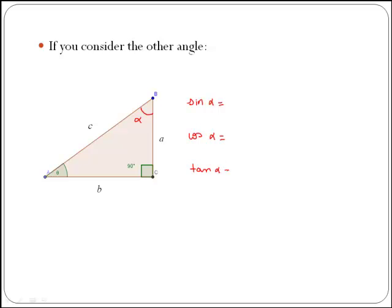The definitions are the same in general, but you have to keep in mind that now the opposite and adjacent sides have changed. Sine of alpha, remember, is opposite over hypotenuse. In this case, the opposite side would be B, while the hypotenuse is still C, because the hypotenuse is opposite the right angle.